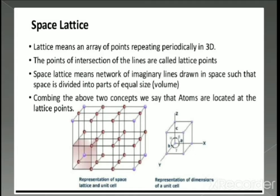Now let us understand the meaning of space lattice. Space lattice means an array of points repeating periodically in three-dimensional space. The points of intersection of the lines are called the lattice points. The space lattice is a network of imaginary lines drawn in space such that the space is divided into parts of equal size. Combining these concepts, atoms are located at the lattice points, forming the space lattice.